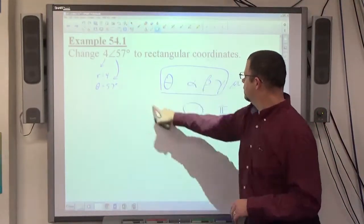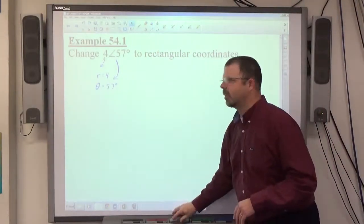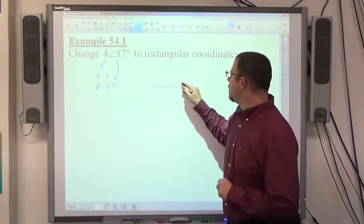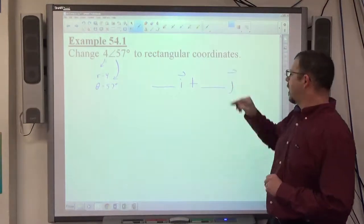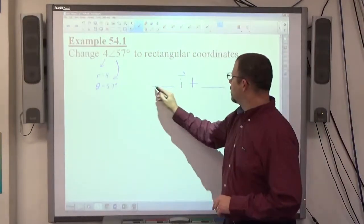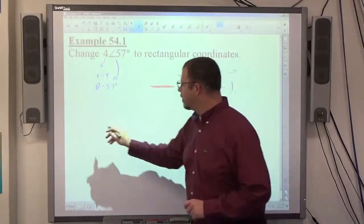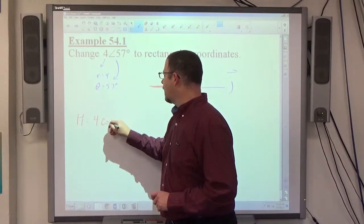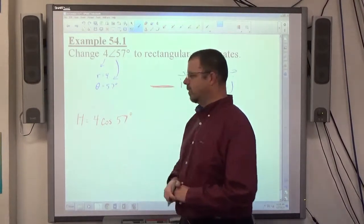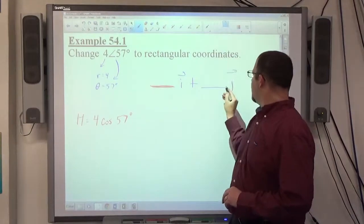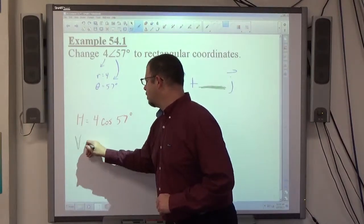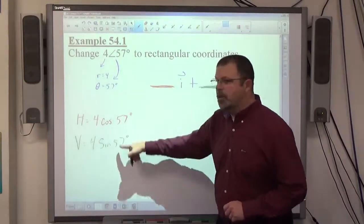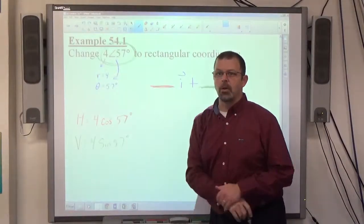All I've got to do is convert to a rectangular coordinate something i plus something j. The something in front of i, we're calling it h, is r, which is 4, cosine of theta, which is 57 degrees. And then we have v, which goes in front of j, and v is simply r, which is 4, times the sine of theta, which is 57 degrees. The two numbers you need to know are the two numbers that are in this polar form.